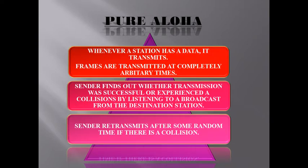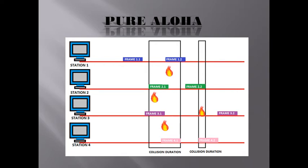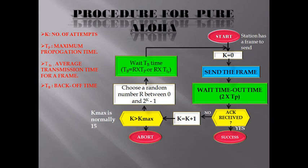Pure ALOHA: whenever a station has data, it transmits. Frames are transmitted at completely arbitrary times. The sender finds out whether transmission was successful or experienced a collision by listening to the broadcast from the destination channel. The sender can only retransmit after some random time if there is a collision. In the diagram, there are four stations in Pure ALOHA. When one station is transmitting a frame, others should not transmit — if they do, there will be a collision. Frame 1.1 is transmitted successfully, but when frame 1.2 starts transmitting, a second frame also transmits at the same time, causing a collision. This collision duration involving two or more frames is called the collision duration.